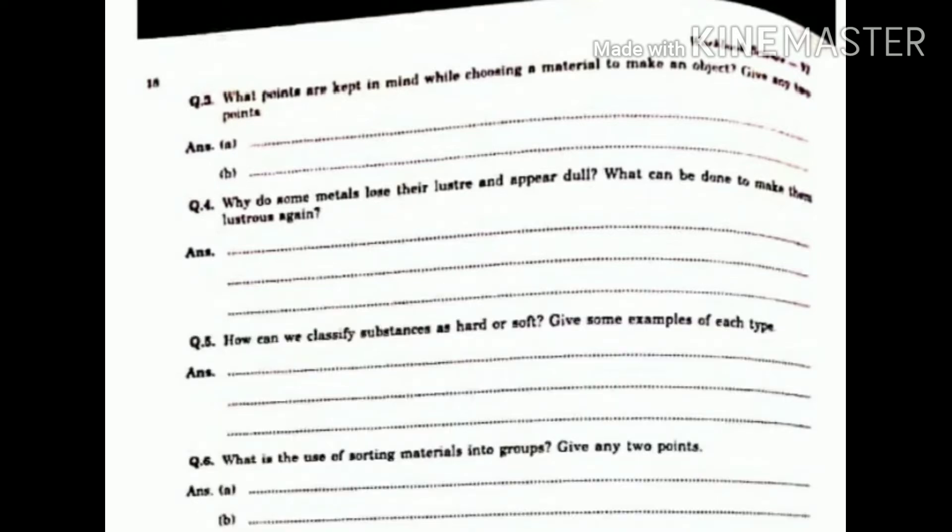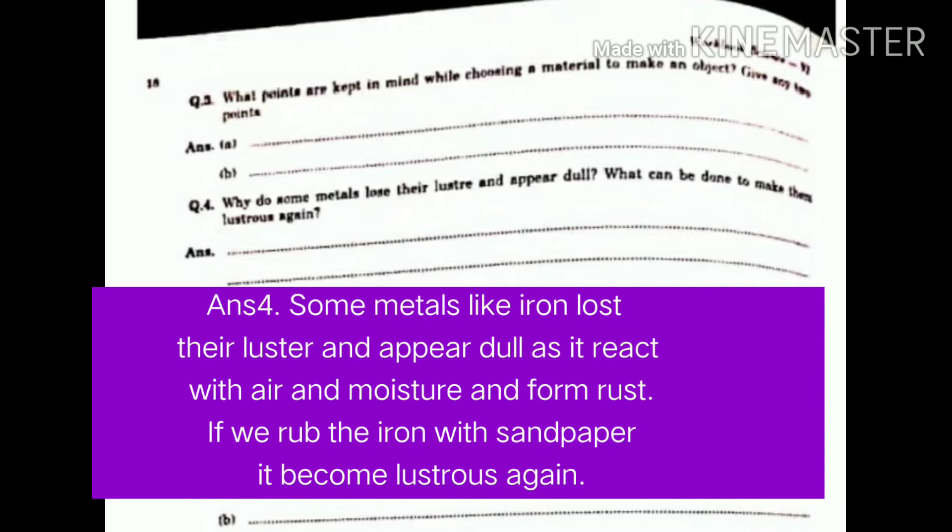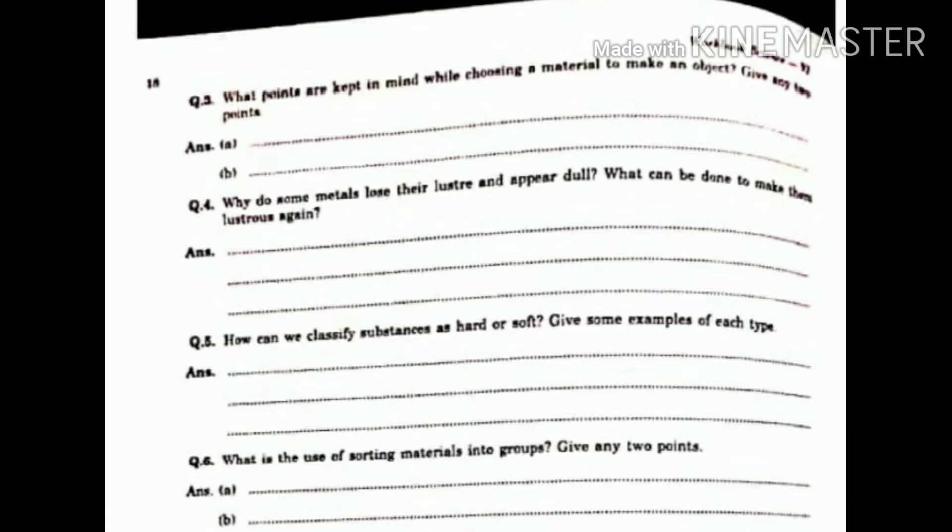Question number 4. Why do some metals lose their luster and appear dull? What can be done to make them lustrous again? Answer. Some metals like iron lose their luster and appear dull as it reacts with air and moisture and form rust. If we rub the iron with sandpaper, it becomes lustrous again.